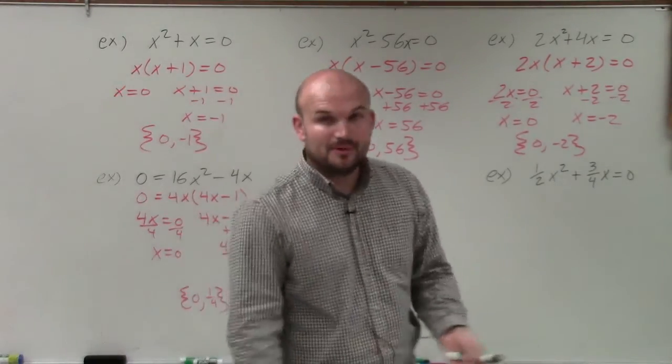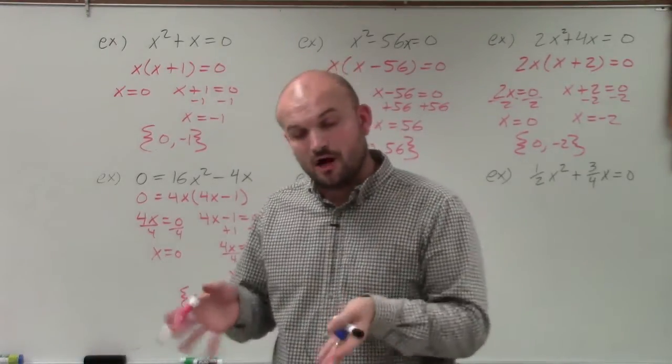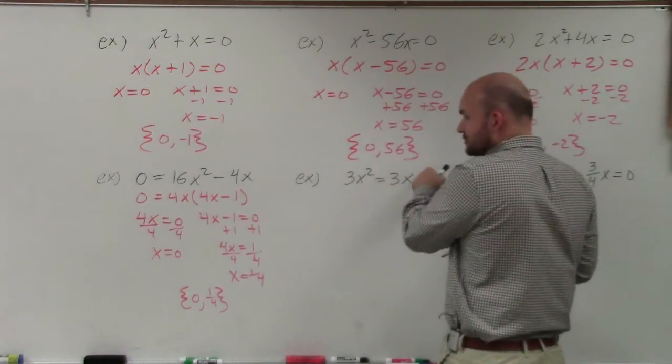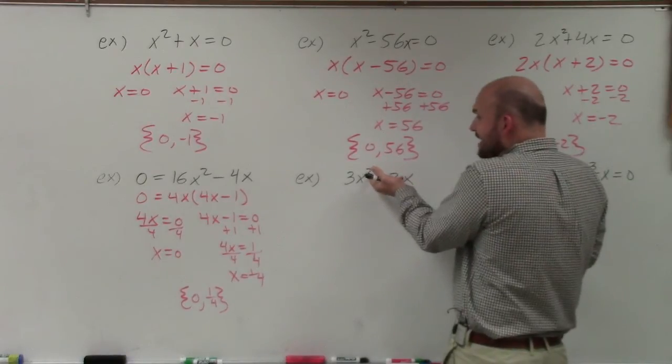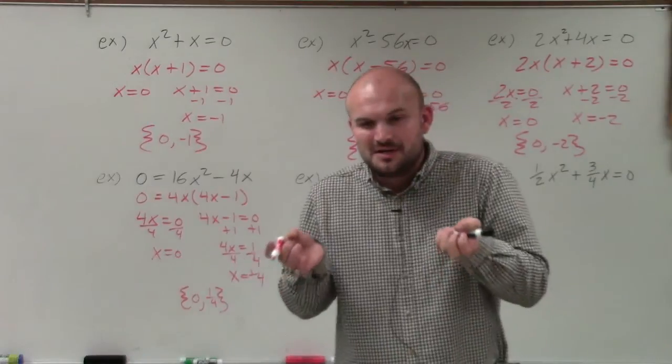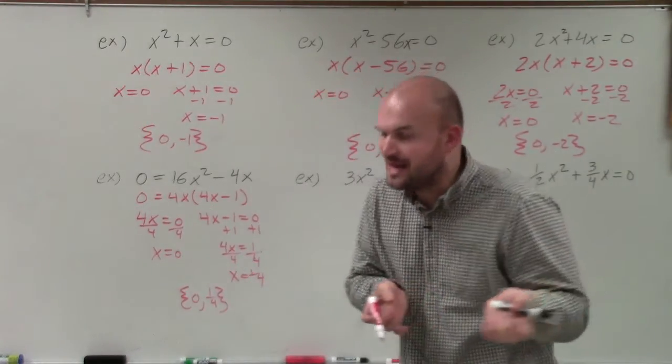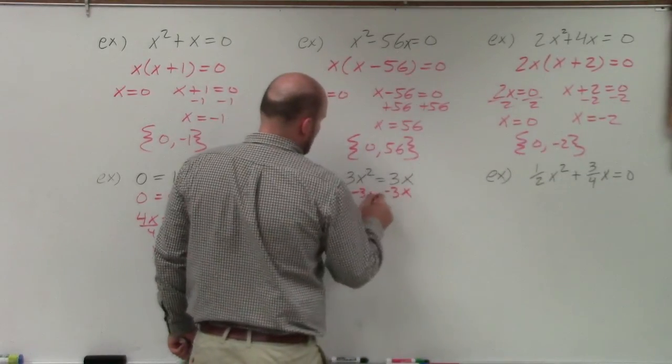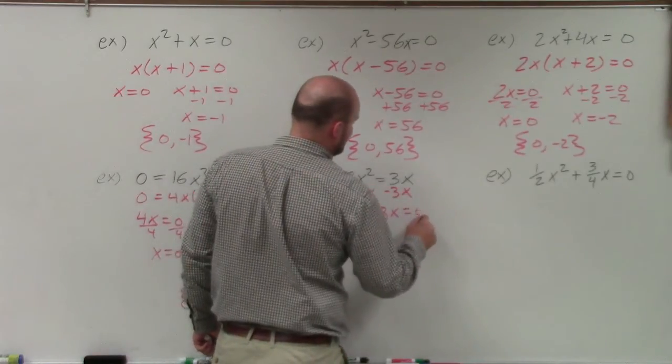Here you can see this is my one example where all my variables are not on the same side. A big mistake students will do is they'll try to divide by 3 and then take the square root. The problem is your answer has the square root as the variable in it, and we can't solve for the solution of a value with having the variable as the solution. So we've got to get to the same side. I'm going to subtract the 3x on both sides. That obtains 3x squared minus 3x equals 0.